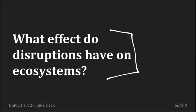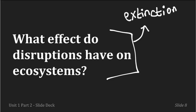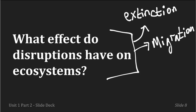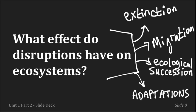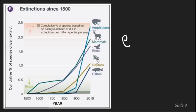So what effect do disruptions have on ecosystems? There are four main effects we'll cover: extinctions, migration, ecological succession, and adaptations. We're going to go through each one of these briefly.